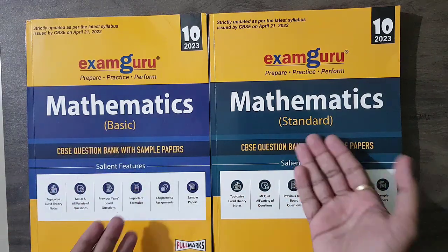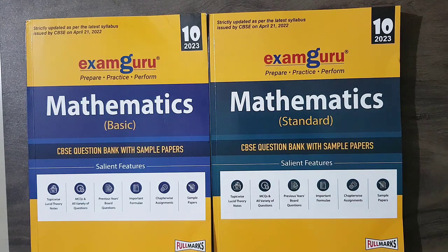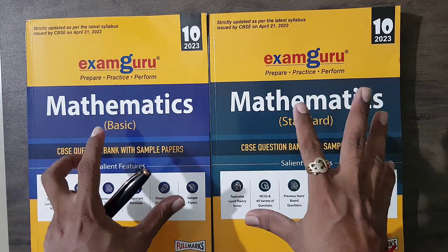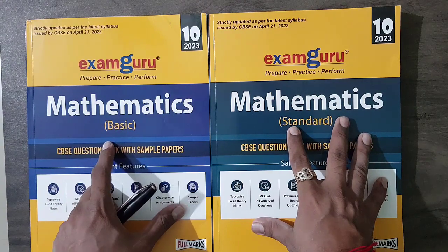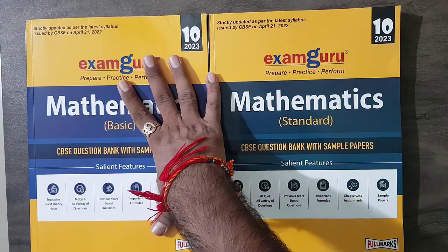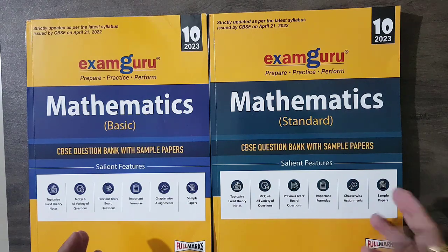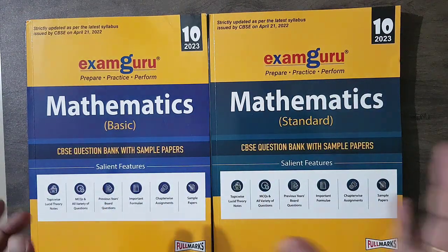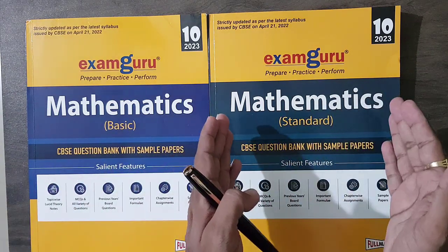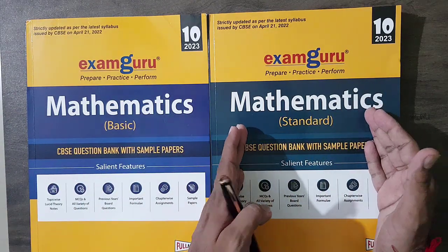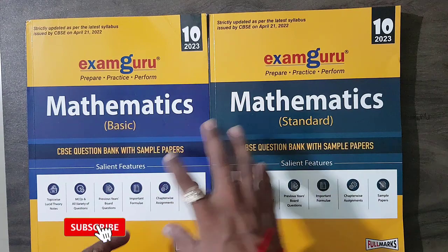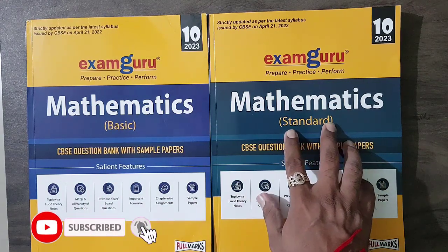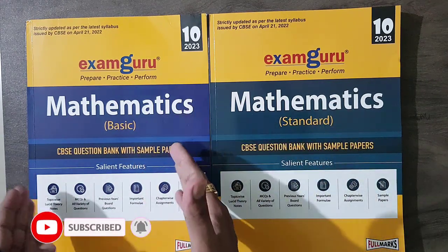Now we know basic and standard are two different types of examination papers. For a student who has taken basic, they need to prepare this only. But for the student who has taken standard, they actually need to prepare both this book because this is basic and this has a little bit higher level questions. So you have to do both if you selected standard.